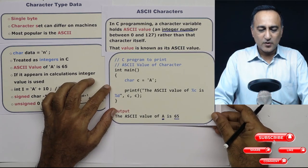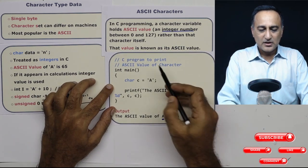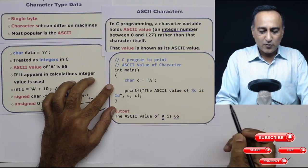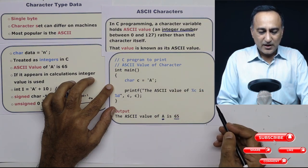To clarify that concept, take a look at a small piece of code here. I'm using a C program to print the ASCII value of a character. So what I'm doing here is I am trying to print this A as well as the ASCII value of this.